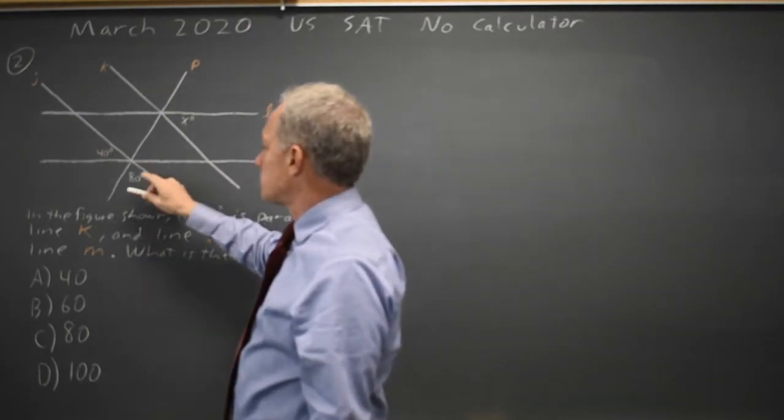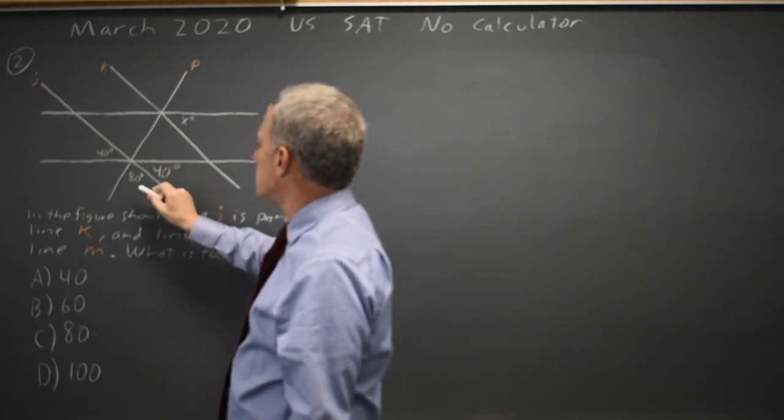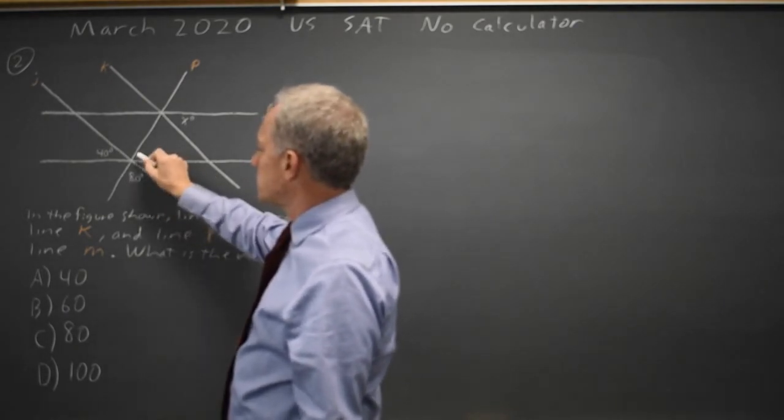Since these two angles are vertical angles, they're both 40 degrees. 40 plus 80 is 120, so this is 60.